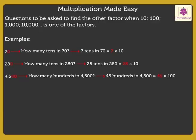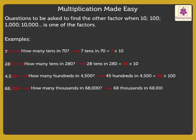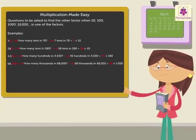Let us look at one more example. Number sixty-eight-thousand. One of the factors is one-thousand, as there are three zeros in sixty-eight-thousand. The question to be asked is: how many thousands in sixty-eight-thousand? There are sixty-eight thousands in sixty-eight-thousand, which is equal to sixty-eight into one-thousand. So, the other factor is sixty-eight. Wasn't multiplication fun today?